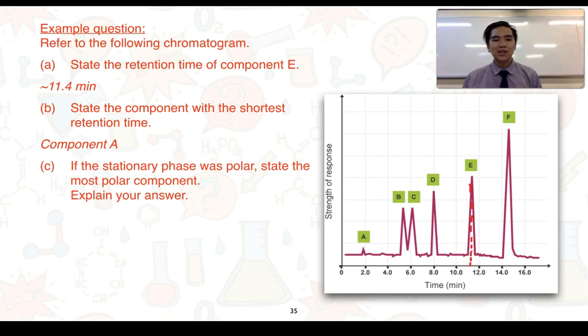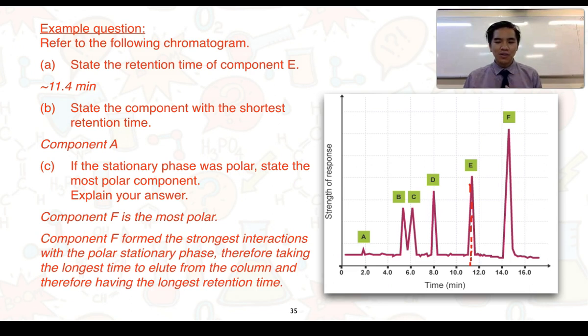Part C, if the stationary phase was polar, state the most polar component and explain your answer. The answer in this case is component F. The reason being is that component F has the longest retention time. This means it's formed the strongest interactions with the polar stationary phase, meaning it requires more time to elute from the column and as a result, results in the longest retention time.